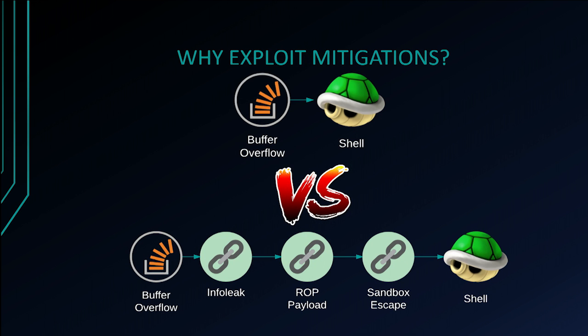Why exploit mitigations? As Ben Hawkes pointed out during his talk at last year's Enigma conference, exploits are essentially chains. In order to complicate exploit development, you need to lengthen the chain by introducing new exploit mitigations, so attackers need to find new bugs to bypass these. Or you need to harden individual links by making the exploit mitigations that exist more robust.